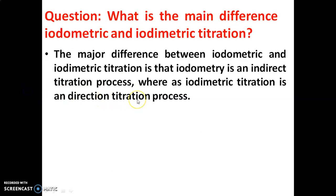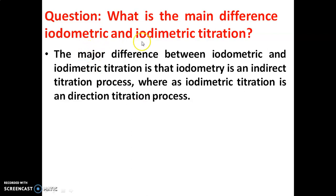What is the main difference between iodometric and iodimetric titration? The main difference is that iodometry is an indirect titration process, whereas iodimetric titration is a direct titration process.